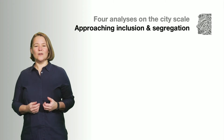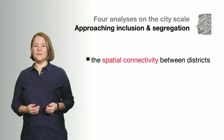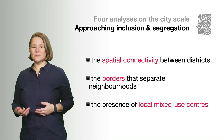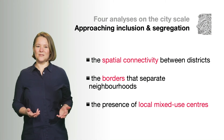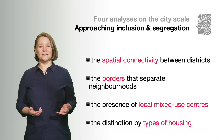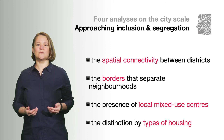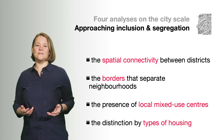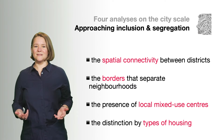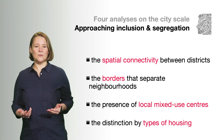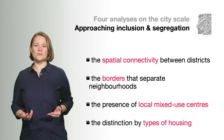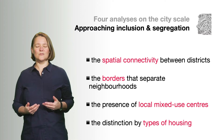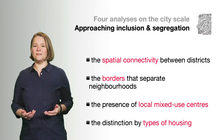The four analyses are: the spatial connectivity between districts, the borders that separate neighborhoods, the presence of local mixed-use centers, and the distinction of neighborhoods by types of housing. Afterwards, these physical analyses will be combined and related with the map of income distribution as an indicator for understanding the socio-economic segregation in the city.